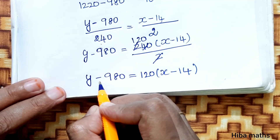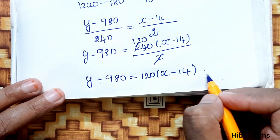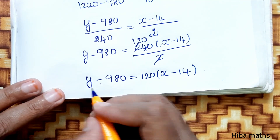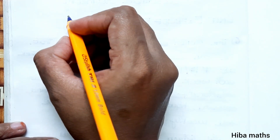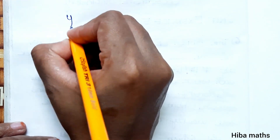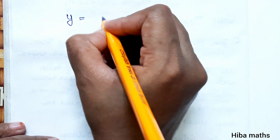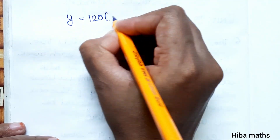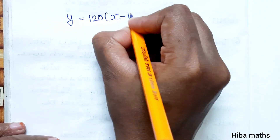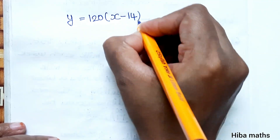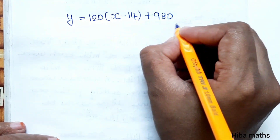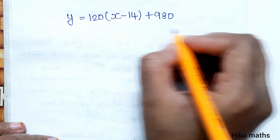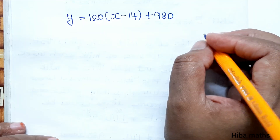Rearranging, Y is equal to 120(X minus 14) plus 980. This is the required linear relationship between selling price and demand.